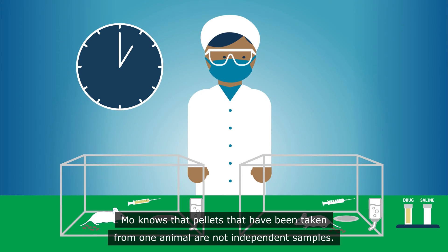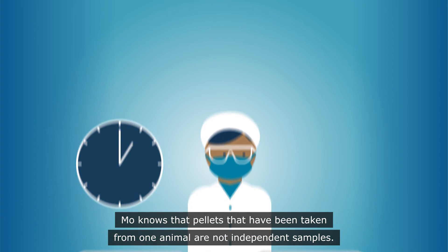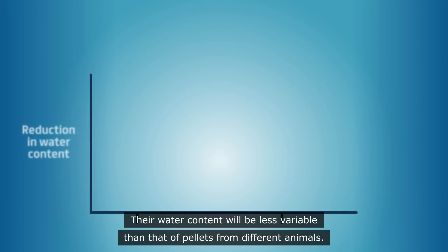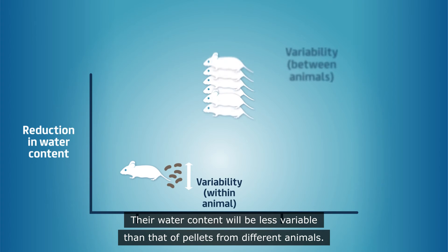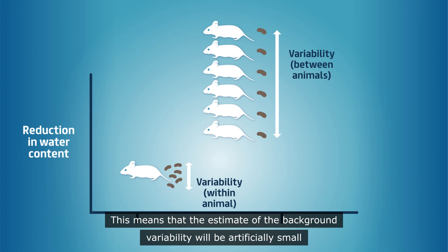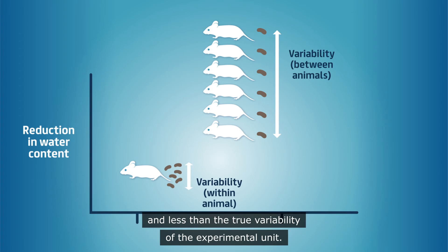Mo knows that pellets taken from one animal are not independent samples. Their water content will be less variable than that of pellets from different animals. This means that the estimate of the background variability will be artificially small and less than the true variability of the experimental unit.